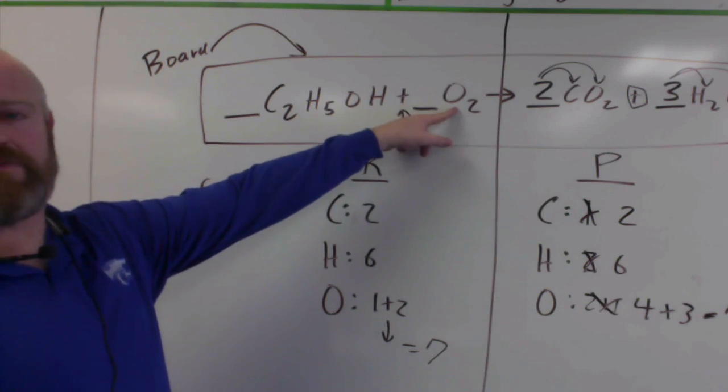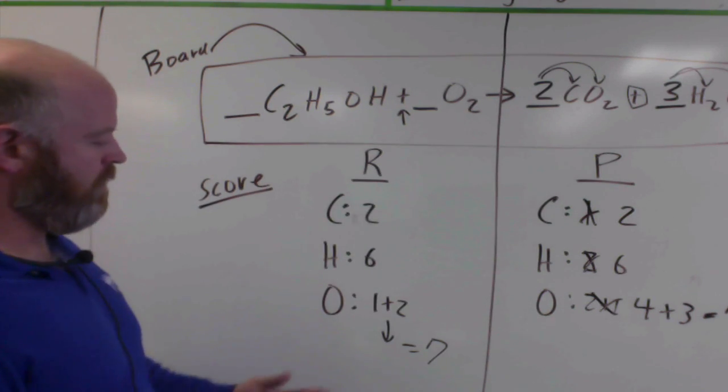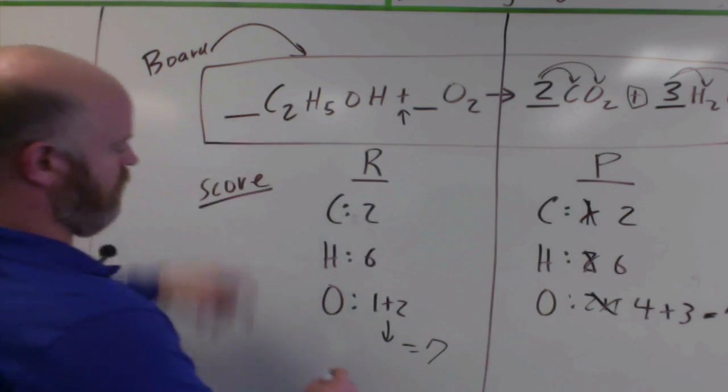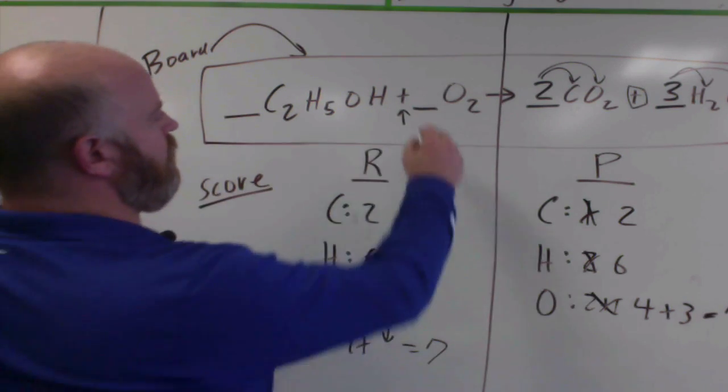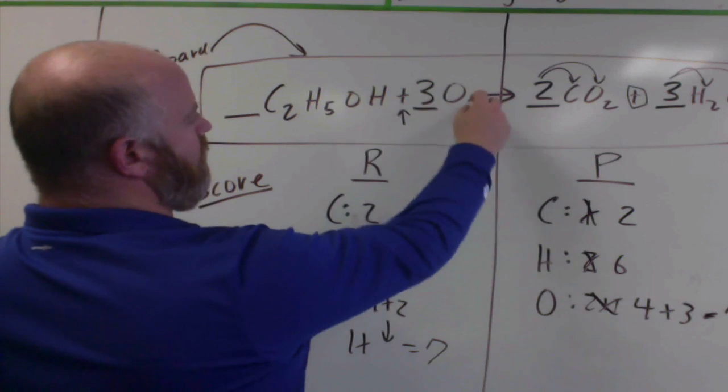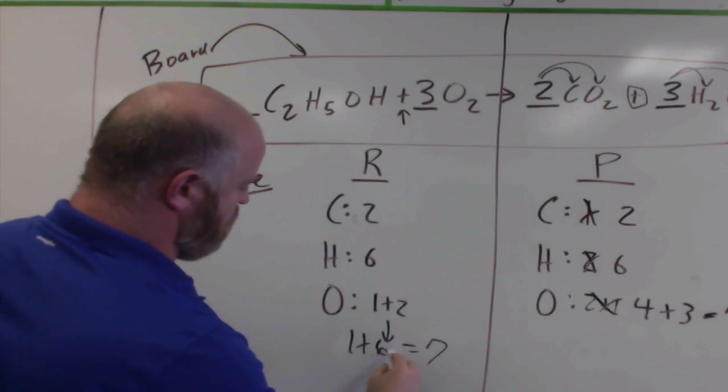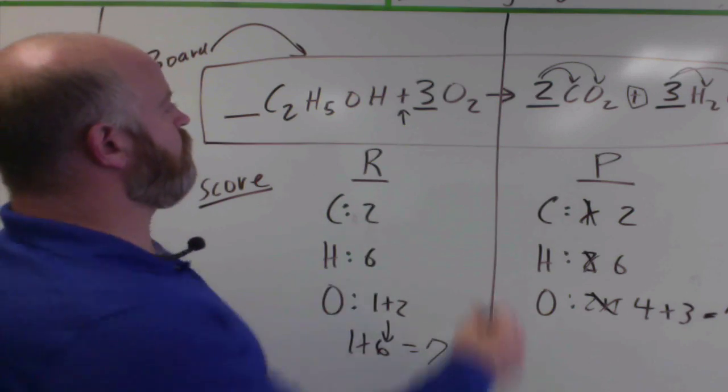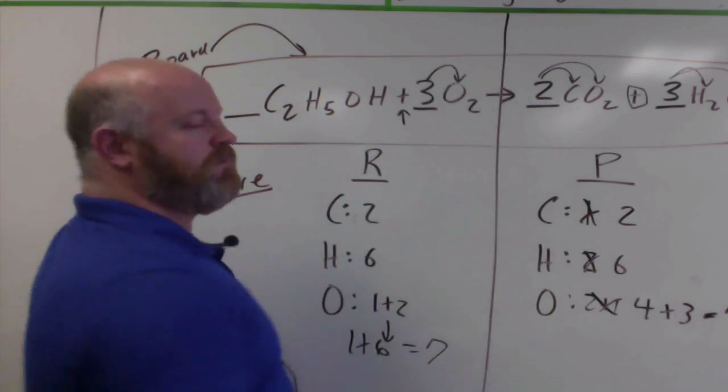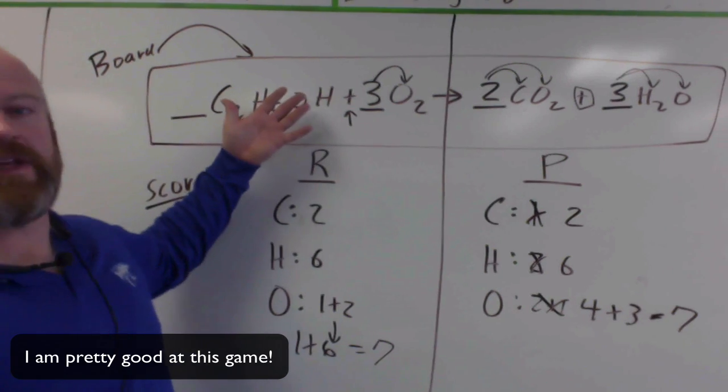But I have oxygen by itself, and I got two of those. So if I left this alone, it would stay a one. And if I put a three in here, now I'd have three times two. This would change to a six. So one plus six is seven. All right. So this three then affects only this oxygen, and I'm done. So I win the game.